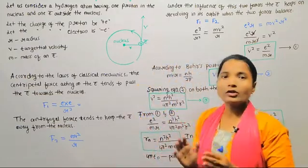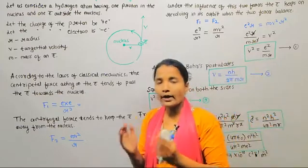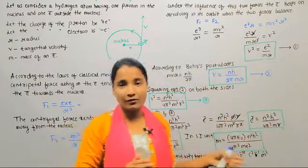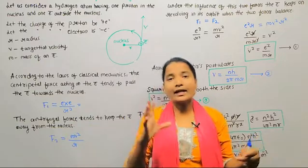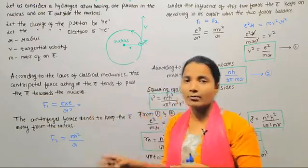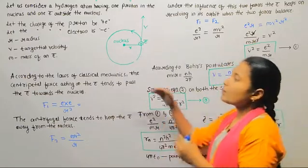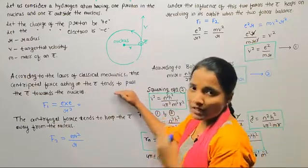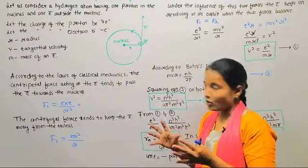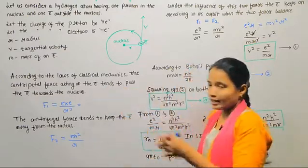Now, according to the law of classical mechanics, two forces arise. One is the centripetal force, and another one is the centrifugal force. The centripetal force is acting on the electrons — it tends to pull the electron towards the nucleus.